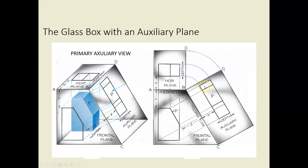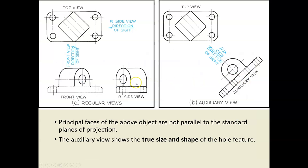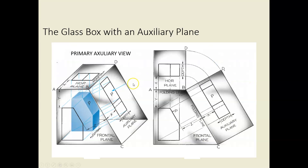To get the inclined surface true shape and size, we orient a projection plane that is parallel to that surface and project through, getting a true shape and size representation. Notice, though, that the other surfaces are now not parallel to this projection plane, so they are no longer true shape and size in the auxiliary view. That auxiliary view shown is a primary auxiliary view, because we're just projecting an inclined surface.